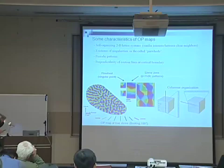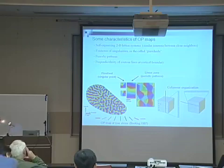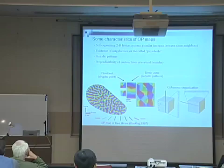And there are linear zones, periodic patterns in which iso-orientation contour lines are straight and running parallel for considerable range. Besides, the contour lines have the tendency to meet with boundaries at right angles.